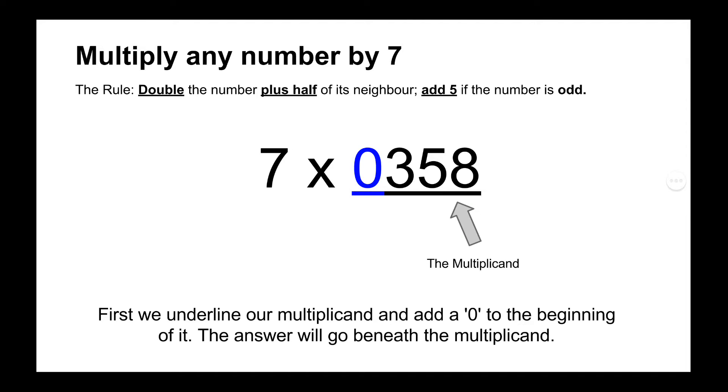So the first thing that we're going to do is underline the multiplicand, which is the number on the right, and add a 0 to the beginning of it to help us with the final calculation that we have to do.